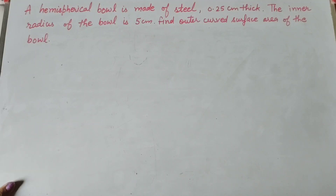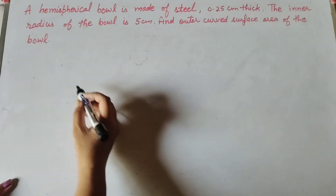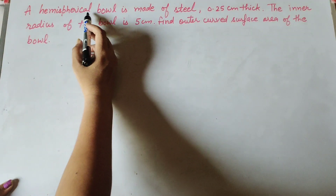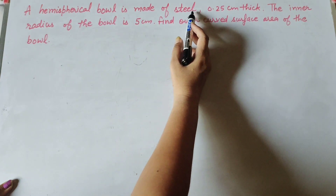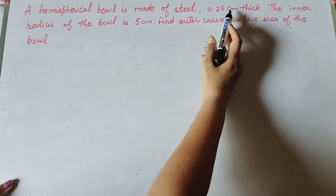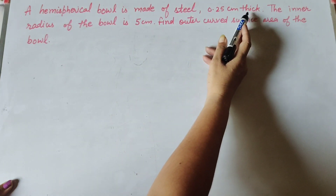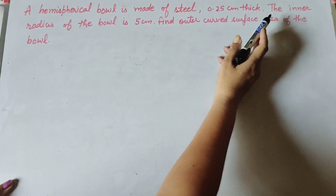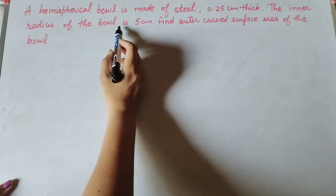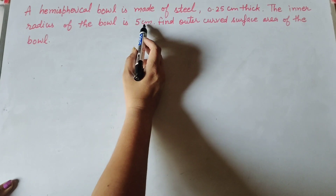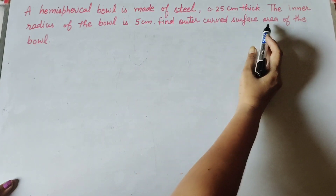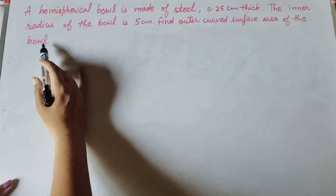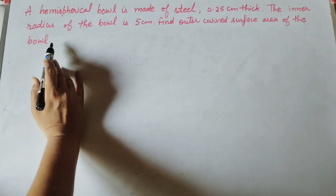Hello friends, welcome to my channel. In this video we discuss: a hemispherical bowl is made of steel 0.25 centimeter thick, the inner radius of the bowl is 5 centimeter. Find the outer curved surface area of the bowl.